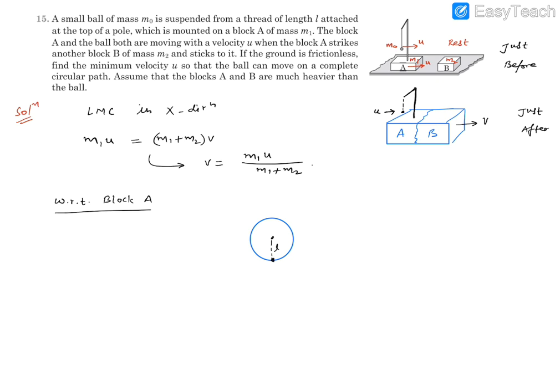Now since we are working with respect to A, so the velocity that will be there now, just after case, is going to be u minus v, relative velocity. This was moving with velocity u with respect to ground, this is velocity v with respect to ground, so velocity of this particle or ball with respect to it is going to be u minus v.